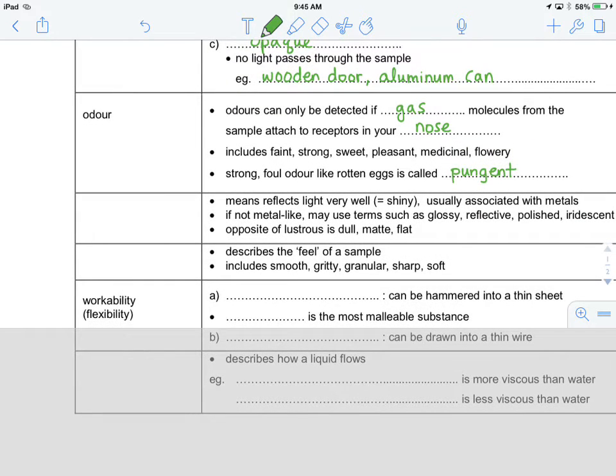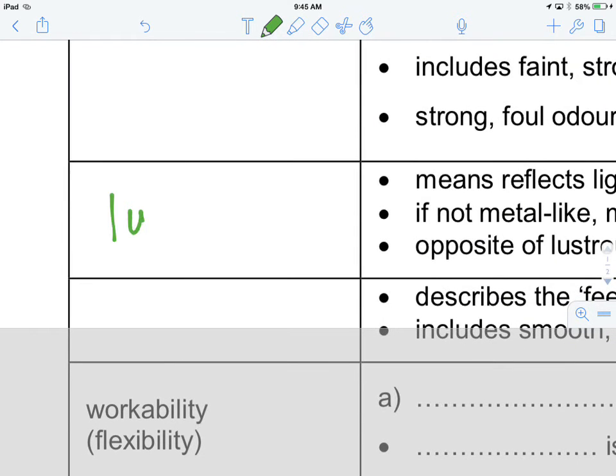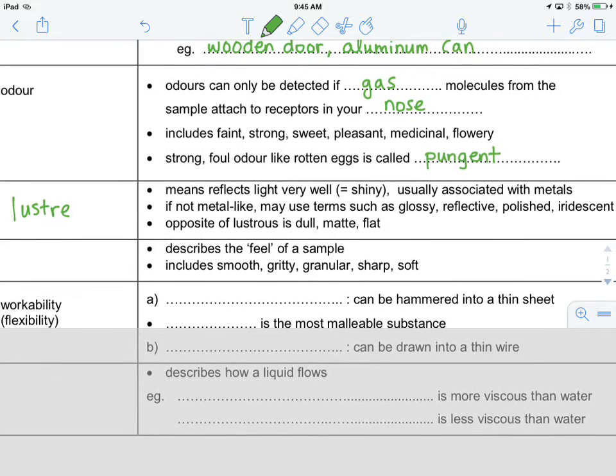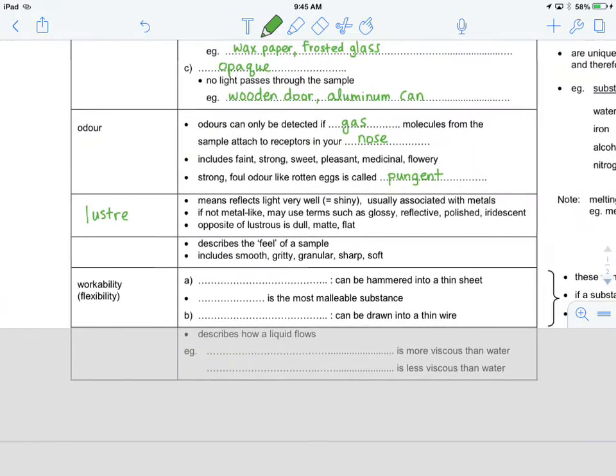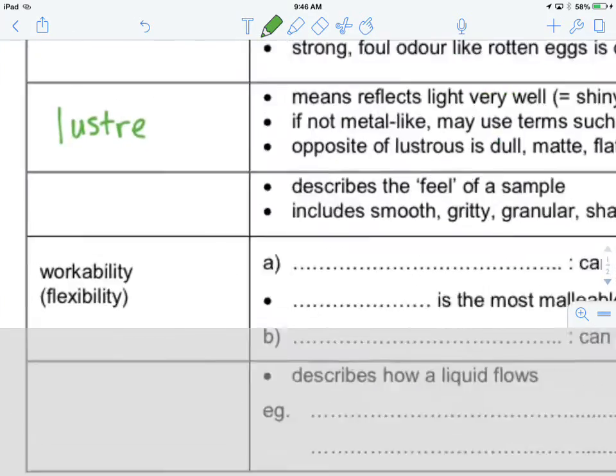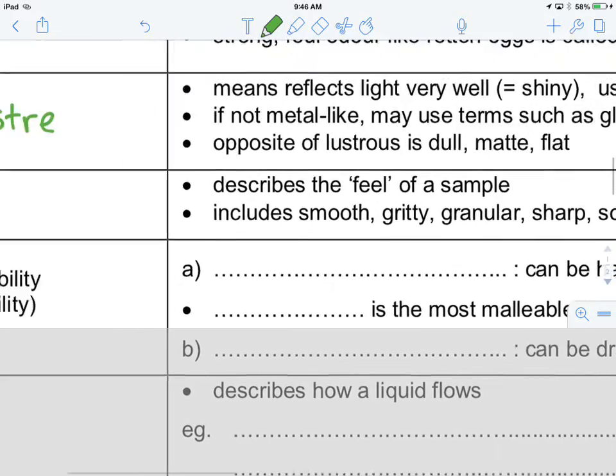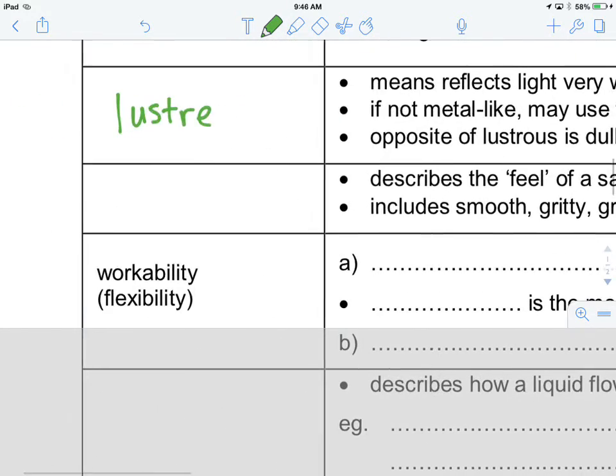Something that's shiny, or how shiny something is, is called its luster. And the luster of an object is very often associated with metals. If something is not metal-like, instead of using luster, we might talk about something being glossy or reflective, polished or iridescent. The opposite of something that is lustrous would be something that's dull or matte or flat. If luster describes how shiny something is, then the word that we use to describe how something feels, whether it's gritty, granular, this is known as texture.